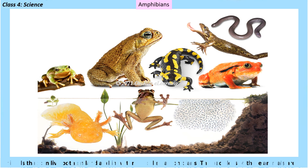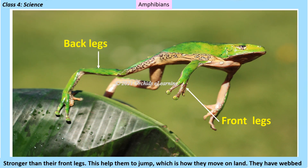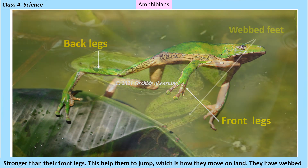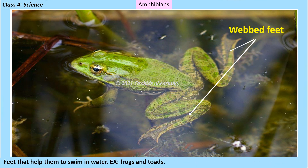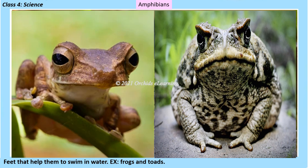Animals that can live both on land and in water are called amphibians. The back legs of these animals are stronger than their front legs, which helps them to jump — how they move on land. They have webbed feet that help them to swim in the water. Examples: frogs and toads.